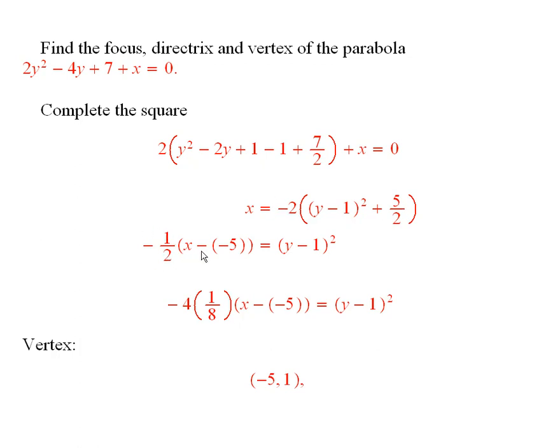So, I have negative 1/2 times x minus a negative 5. See, what happened there was I took negative 2 times this, that gave a negative 5. I added the 5 to both sides, and this is x plus 5, you see.